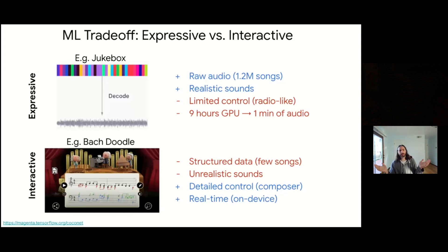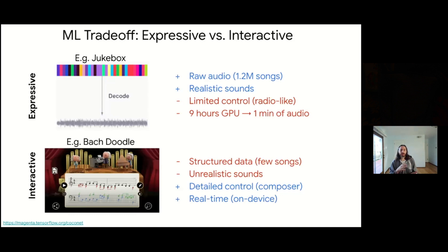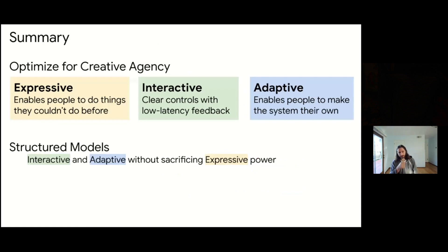On the other side of the spectrum, there was an interactive Bach Doodle we released through the main Google homepage, trained on Bach chorales, such that a user could input individual notes and it would do different harmonizations, and you could tweak them further. In that case, you have very structured data with very little training data — only symbolic representations of notes from a few pieces. The sounds are unrealistic because you just have notes played back using a synthesizer or sample pack. But on the plus side, you give the user very detailed control, and it was so fast it could run in real-time in the browser. So you have this trade-off between interactivity and expressivity.